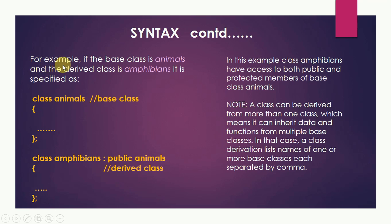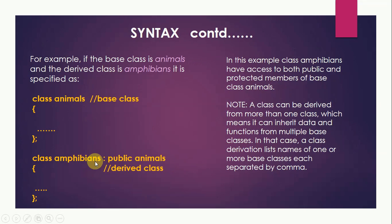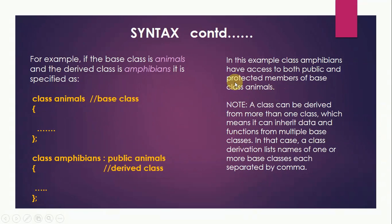Suppose the base class is Animals and the derived class is Amphibians. First the base class is declared: class Animals, in which all the features of animals are there. And then: class Amphibians colon public Animals. Public is one of the access specifiers; it can be public, private, or protected. We then give the name of the base class. So class Amphibians is inheriting from class Animals. In this example, class Amphibians has access to both public and protected members of the base class Animals.